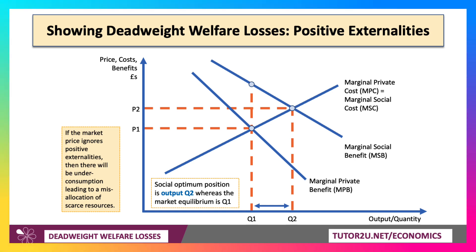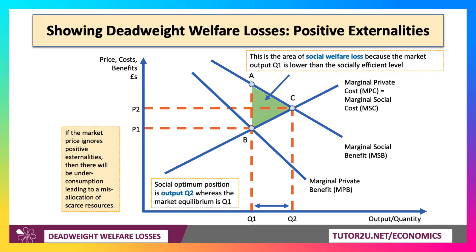We'd rather be at Q2 than Q1. So there's a market failure, a misallocation of resources, and the social welfare loss is the area ABC — shaded in green — because the market output Q1 is lower than the socially efficient level of production.